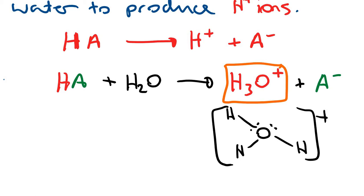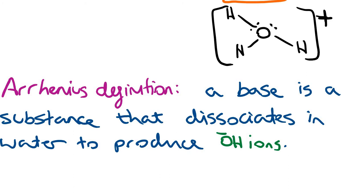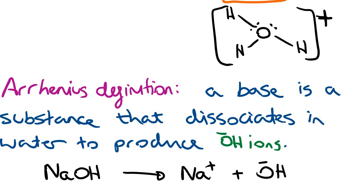According to Arrhenius, a base is a substance that dissociates in water to produce OH− ions. For example, NaOH breaks apart in solution to form Na+ and OH− ions. Any base that dissolves in water is technically an alkali, which is a source of OH− ions.